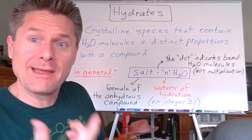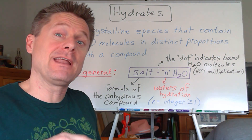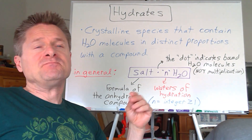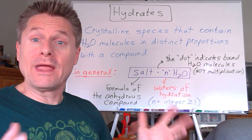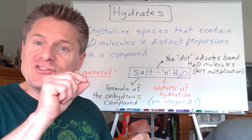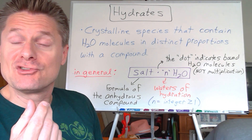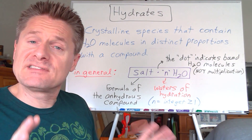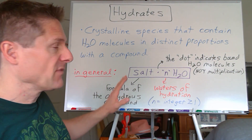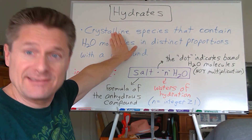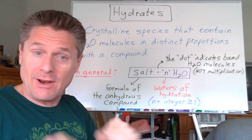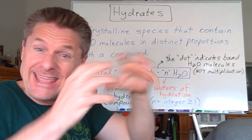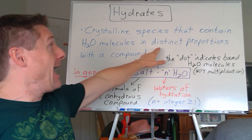Ionic compounds have positive cations and negative anions. Water molecules, which are all over the air depending on relative humidity, might stick to these salts. Water is polar — the oxygen has a slightly partial negative charge and the hydrogens have a slightly partial positive charge. So water molecules can spin around and be attracted to the ions in an ionic crystal. Not all salts do this, but some of them do.